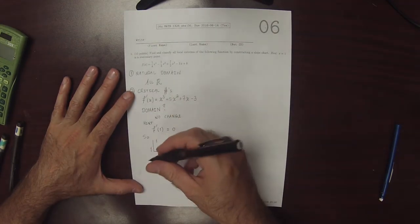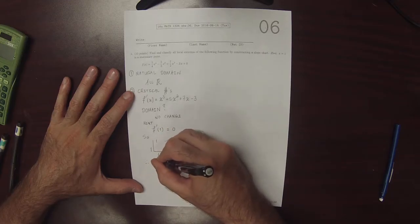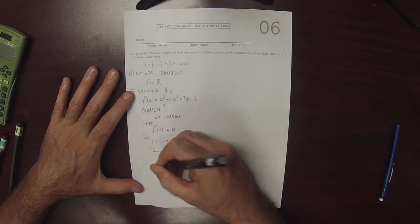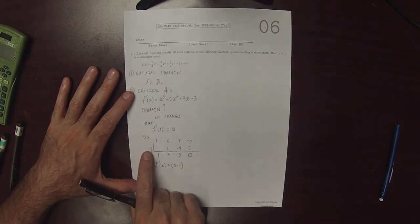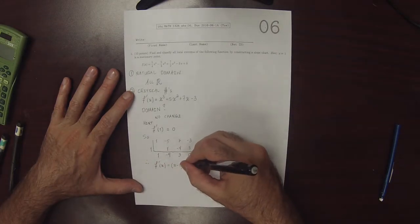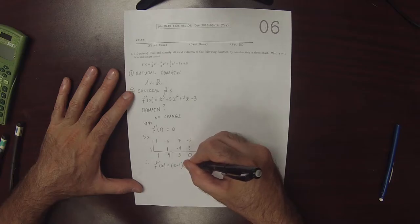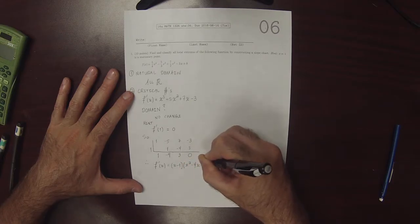As a result of this, we now know that the derivative factors as x - 1 is one of the factors because when you evaluate at 1, you get 0. And the other factor is x² - 4x + 3.